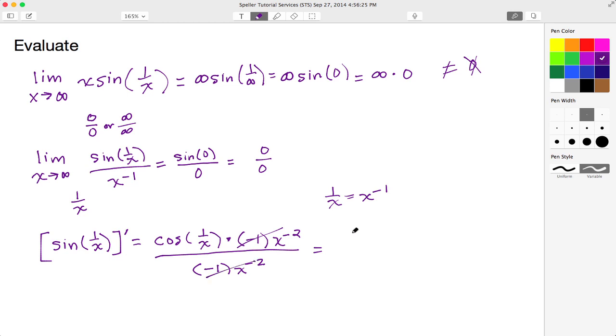And I'm left with the cosine of 1 over x. Now what I'm going to do is take the limit as x approaches infinity of cosine(1/x).